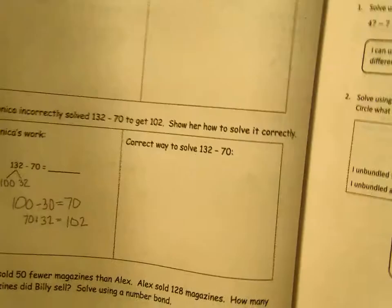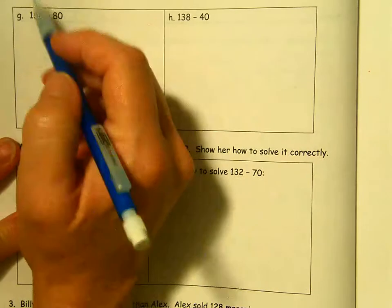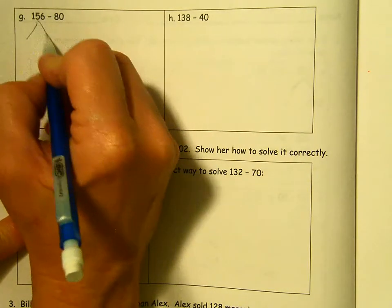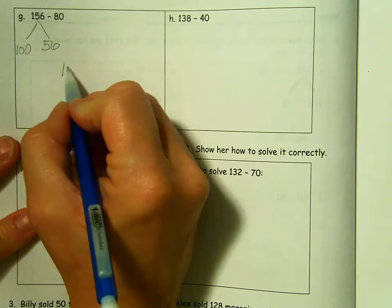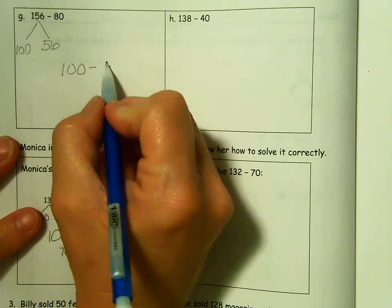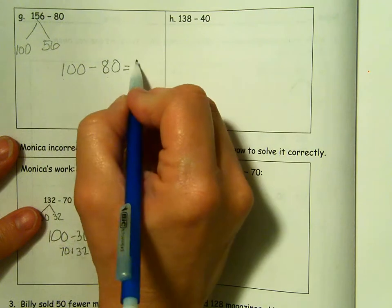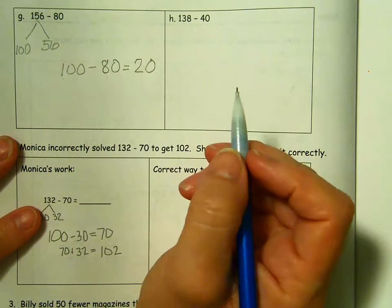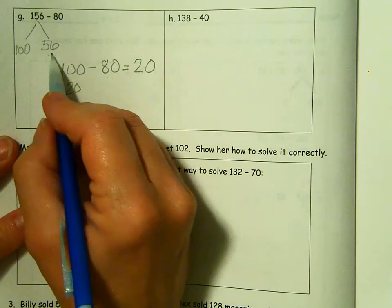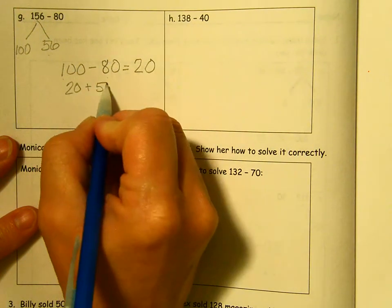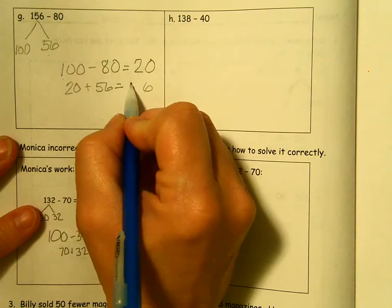Page 100. There are a couple more just like what we've been doing. 156 minus 80. We're going to split that up, take out our 100 and we have 56 left. We're going to subtract from the 100 part. 10 tens minus 8 tens is 2 tens or 20. Then we have to add the other part back in. 20 plus 56. 6 and 0 is 6. 5 and 2 is 7.